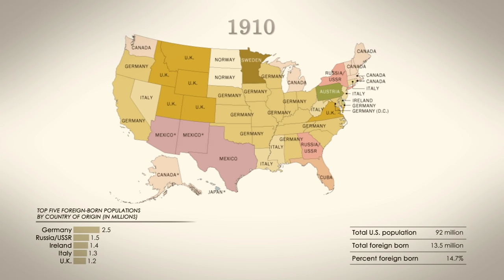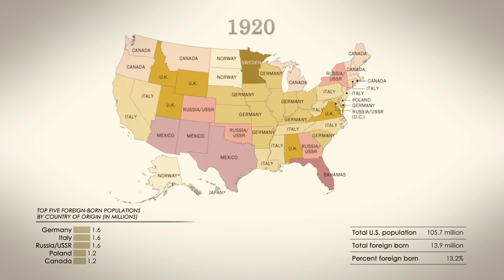1910 shows us how quickly things can change, with large numbers of Russians and Italians arriving. The only state where Ireland was the top country of origin was tiny Delaware.